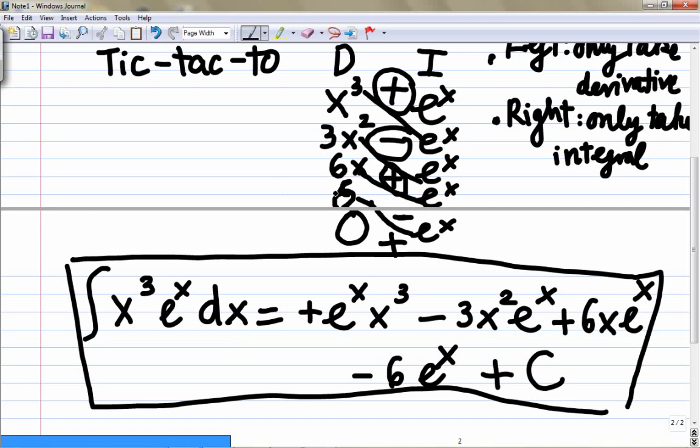The only weakness of this method is you should have a polynomial term so that when you take the derivative it's gonna go to zero. But with this method you can do very quickly if you can take the derivative of one term and integral of the other term, and one of the derivatives goes to zero.